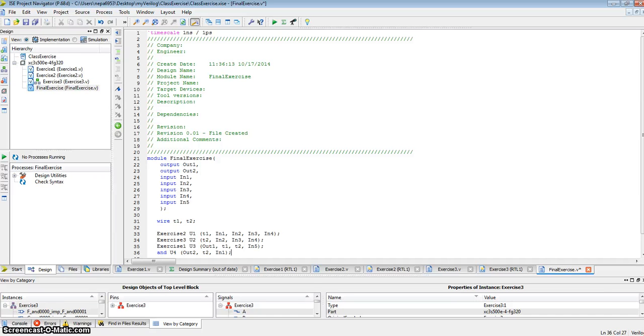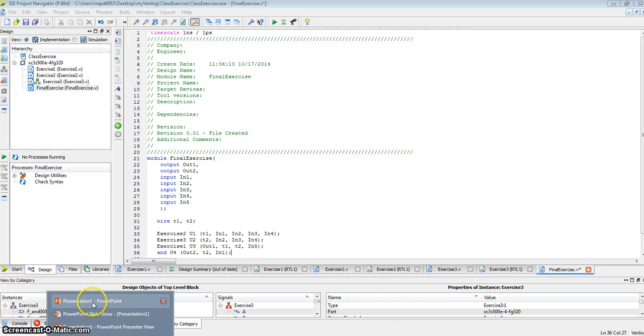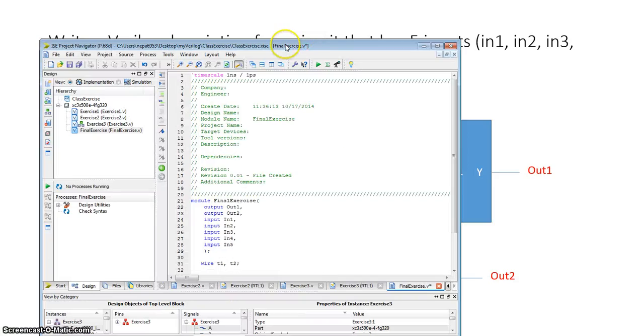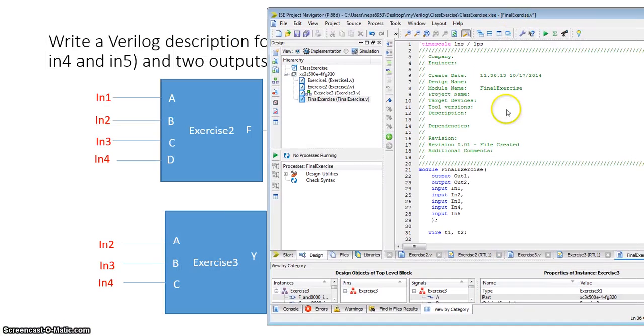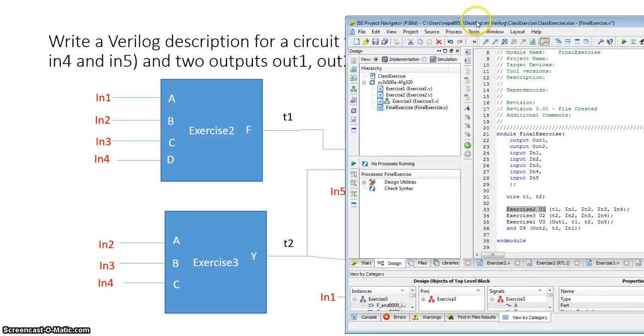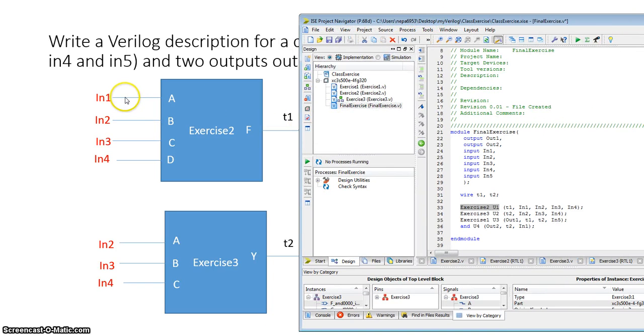So what we've done is basically describe this connection right here. Take a look. Exercise two, instantiated as u1, had output called t1, inputs called in1, in2, in3, in4. Exercise three, instantiated as module u2, has an output called t2, and inputs called in2, in3, and in4 in that order.